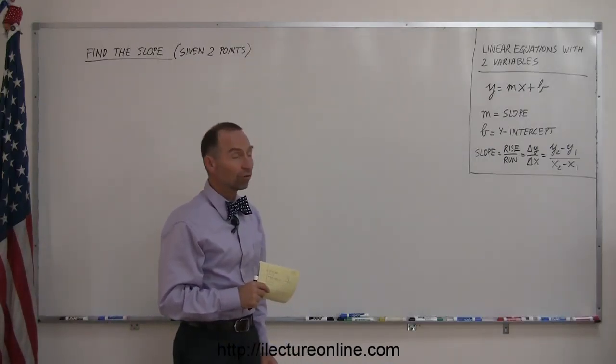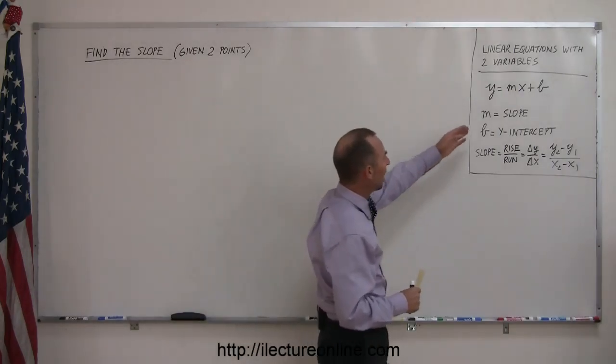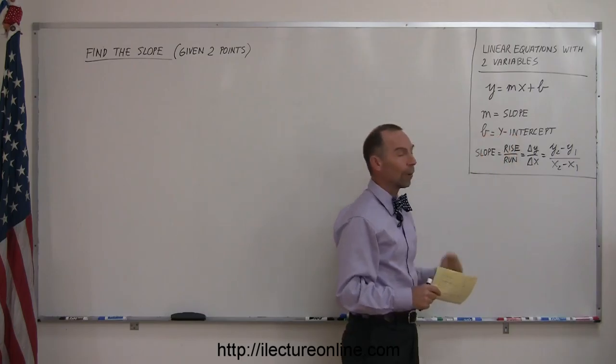Working with linear equations with two variables, the equation has a general format y equals mx plus b. M is known as the slope, b is known as the y-intercept.